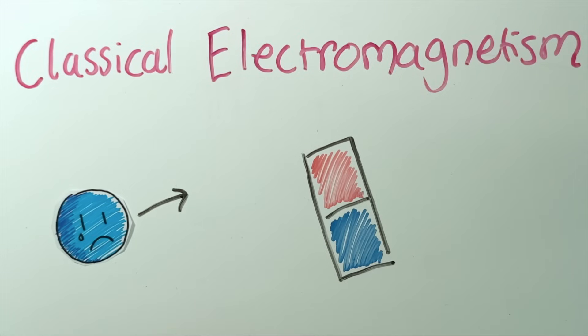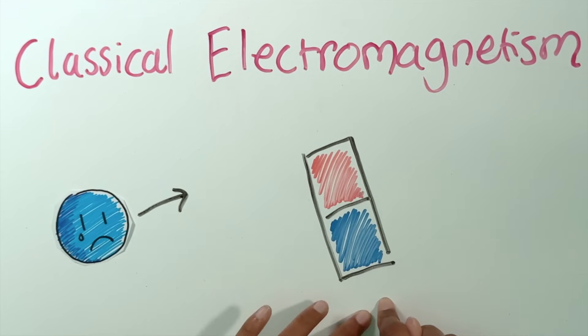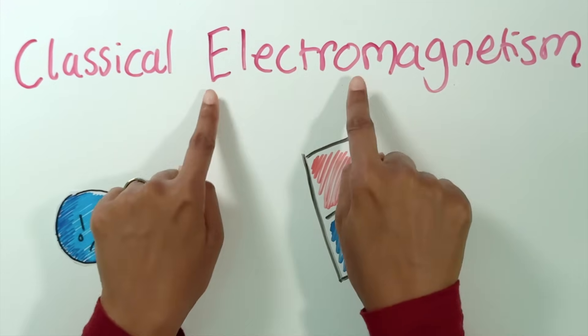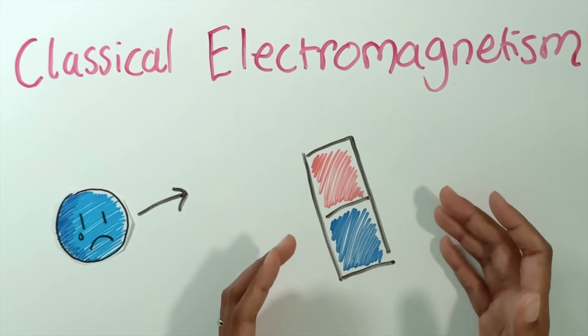There's one piece of classical electromagnetism we're going to need for this video. It is a really deep and surprising result: that's why it's called electromagnetism, because it showed that electricity and magnetism are not really different things — they're actually kind of the same. A charged particle moving is what causes magnets. This was known by the time people were coming up with quantum mechanics, so of course it was baked into quantum mechanics.